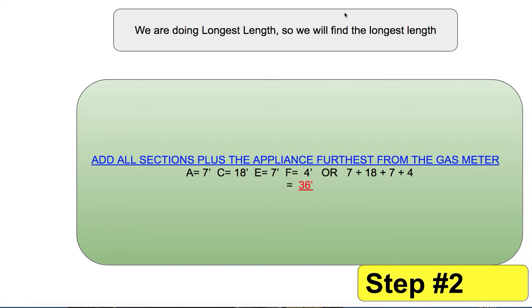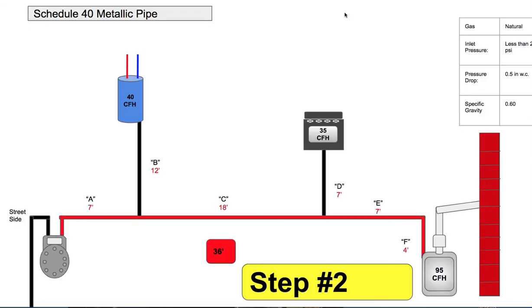Now, it's the longest length method, so we have to find the longest length — from the meter outlet to the furthest gas appliance. So in this example, you add up the main from the meter outlet to the furnace, because the furnace is the furthest gas appliance away from the meter. You get 36 feet — sections A plus C plus E plus F equals 36 feet.